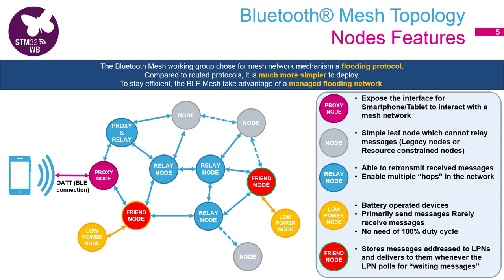Since the main drawback of a relay is power consumption, there is a concept of a low power node. Low power nodes are typically battery-operated and usually send data but rarely receive them. The low power node is most of the time in an inactive mode consuming very little energy. It wakes up periodically and exchanges messages with its friend node.